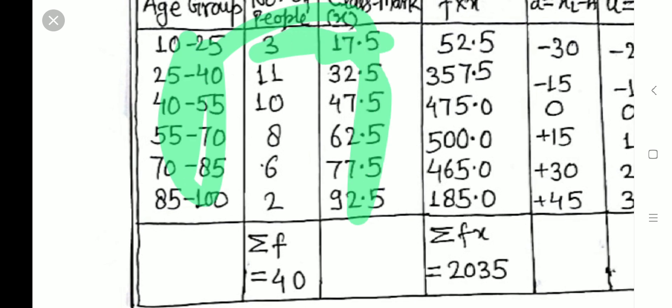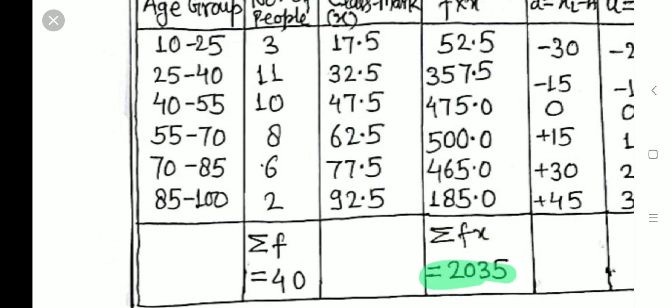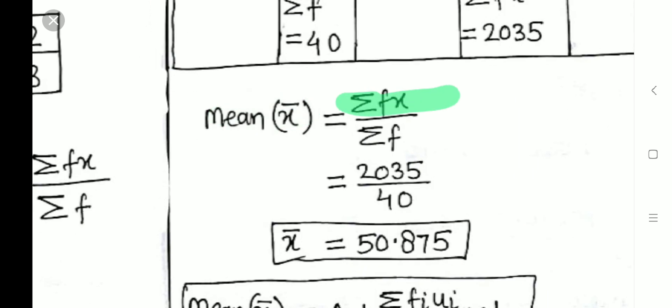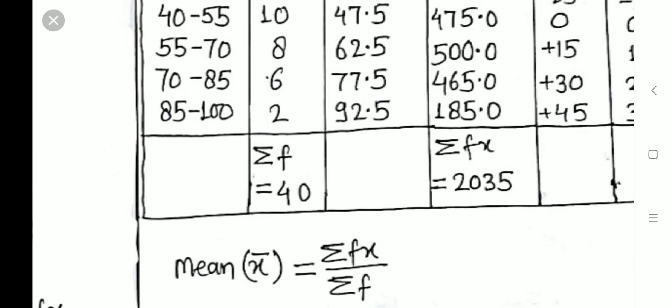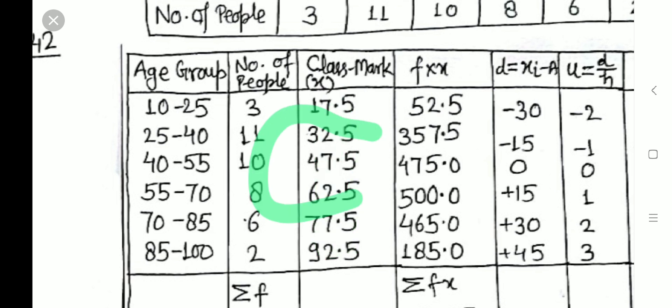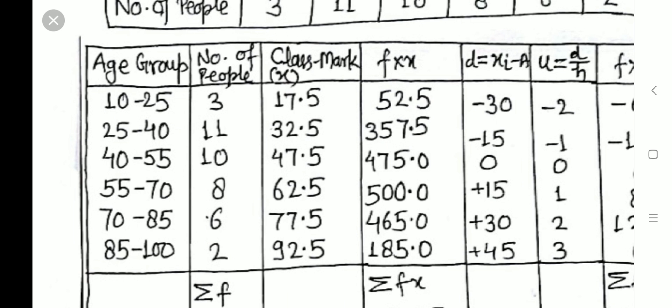When values are larger, we can use the assumed mean method to simplify calculations. We assume a mean 'a'. Since we have 6 groups (an even number), we take a middle class mark as assumed mean. Here we take a = 47.5. Then we calculate d = x − a for each class mark: 17.5−47.5=−30, 32.5−47.5=−15, 47.5−47.5=0, 62.5−47.5=+15, 77.5−47.5=+30, 92.5−47.5=+45.